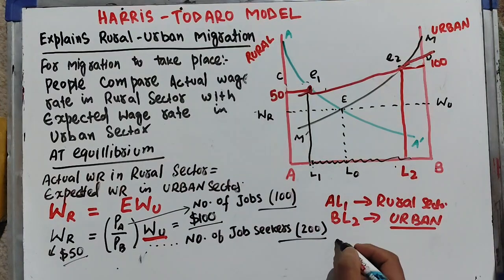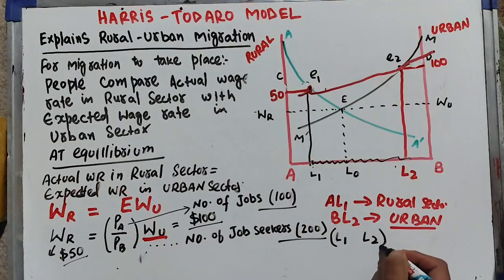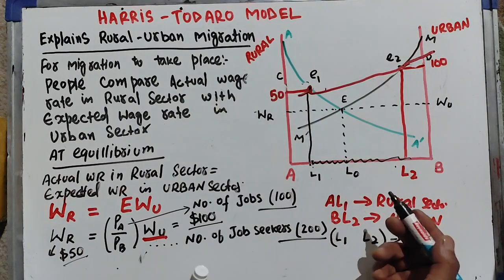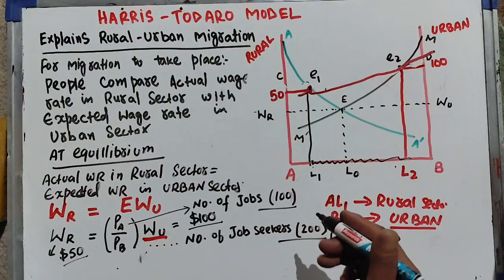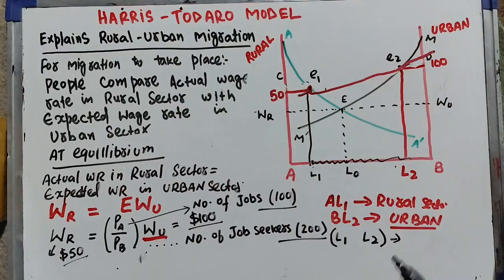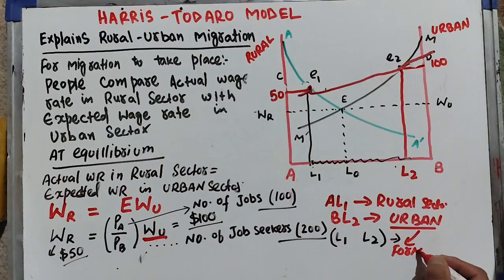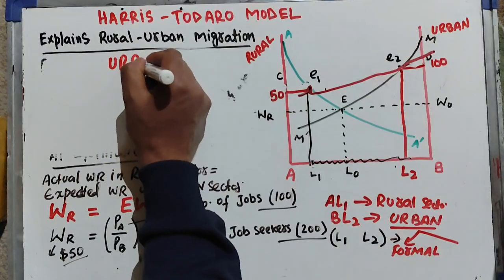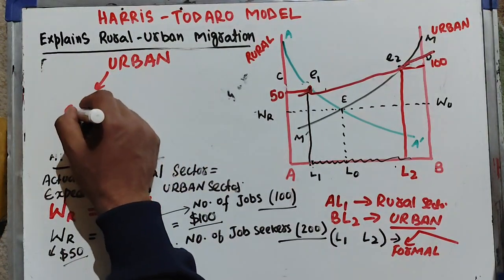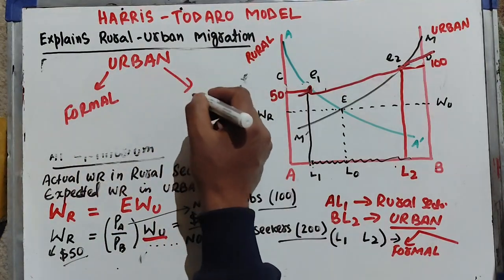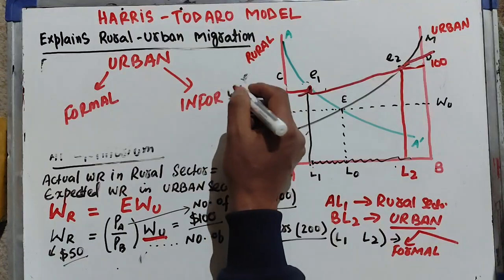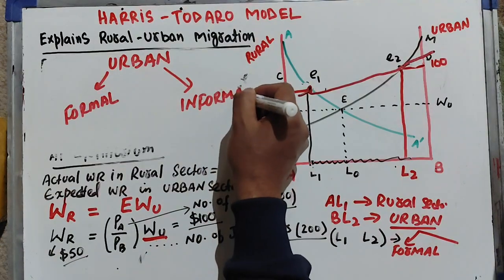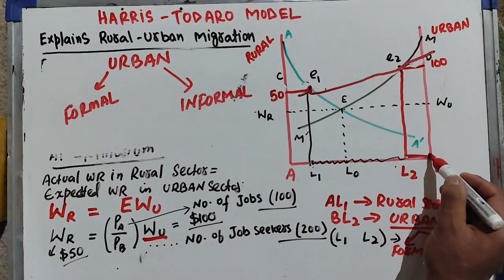The workers from L1 to L2 are those who cannot return to the rural sector but also don't want to remain unemployed in the urban sector. To understand this, we decompose the urban sector into the formal sector and the informal sector — also called the organized and unorganized sectors.